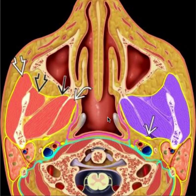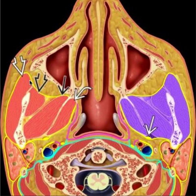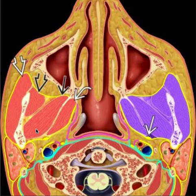Starting with the muscles of mastication located in the masticator space, shown here in purple. Moving to the left we can see more detail. The first muscle is the masseter muscle, the second is the temporalis, and then we have two paired muscles — the medial pterygoid and the lateral pterygoid.